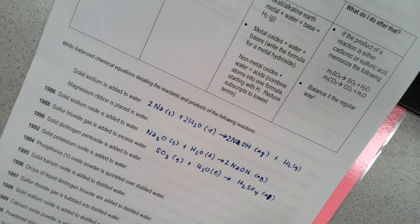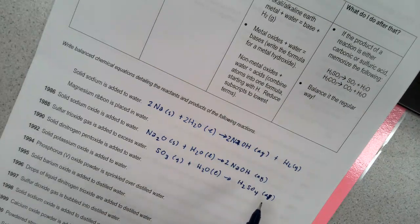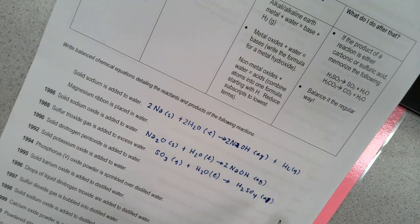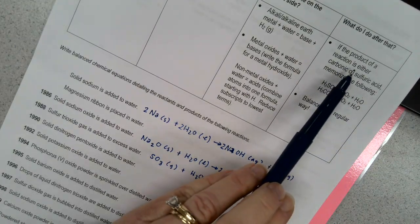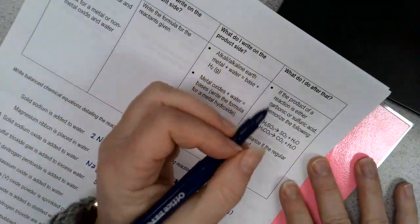So the other thing that I want to point out here, and this is where the typo is, because if you're reading here where it says what do I do after that, sometimes the acid will break down and form further products. You know, it just breaks apart. Well, here it says if it's either carbonic or sulfuric, that's actually not the case. We need to change this.